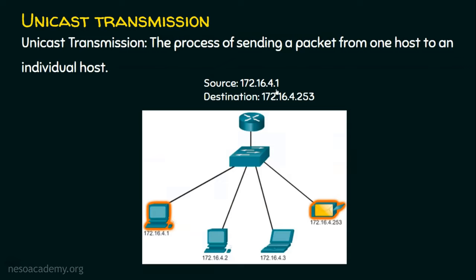The source is 172.16.4.1. This source computer is going to send the data to exactly one destination, which is 172.16.4.253. Here, the destination address is a unicast address. After getting the data from the application layer, transport layer, then in the network layer, this host encapsulates the IP header, which will have source IP address and destination IP address. When a packet is created, it puts 172.16.4.1 as the source IP address and 172.16.4.253 as the destination IP address. In this case, the transmission is a unicast transmission.